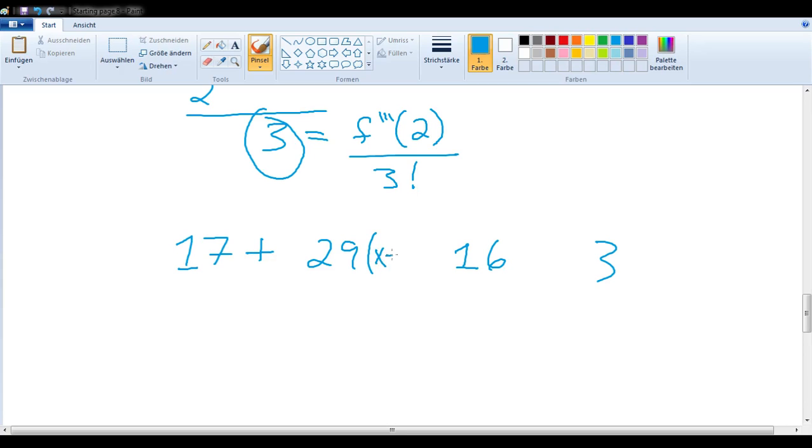Plus 29 times x minus 2 to the 1st power, but of course we can leave that off. Plus 16 times x minus 2 squared. Plus 3 times x minus 2 to the 3rd power.